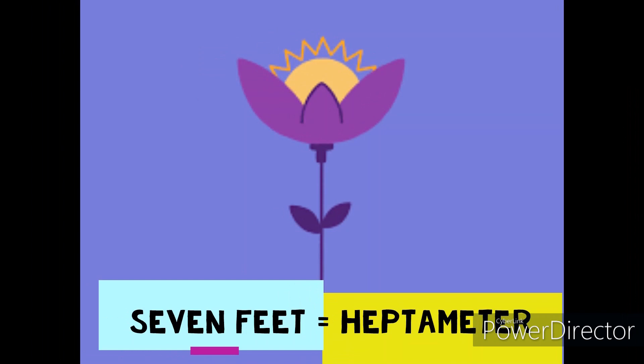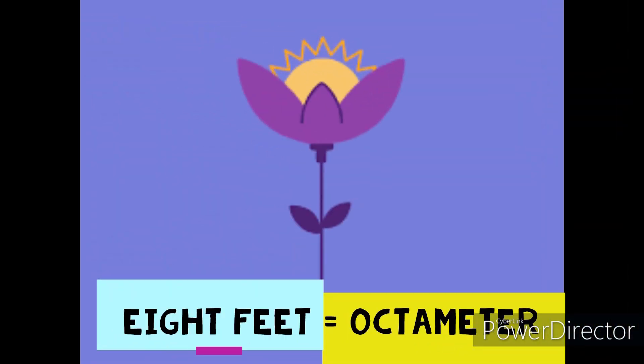If we have seven feet, that means fourteen syllables, and fourteen syllables gives us the heptameter. Greek suffixes are attached to the word meter. If we have eight feet, that means sixteen syllables, and eight feet gives us the octameter. To recap: monometer, dimeter, trimeter, tetrameter, pentameter, hexameter, heptameter, octameter.